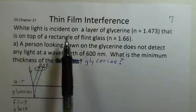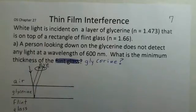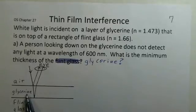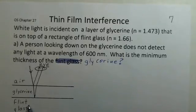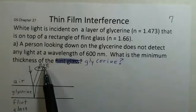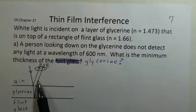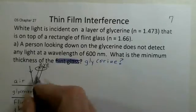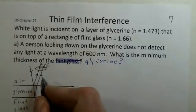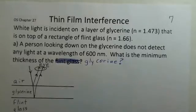We have white light, all colors, coming down onto glycerin. We have an index of refraction given for glycerin, and then flint glass underneath with its index of refraction. A person with their eye up here is looking down at the reflected light coming back up from the top and bottom of the glycerin.